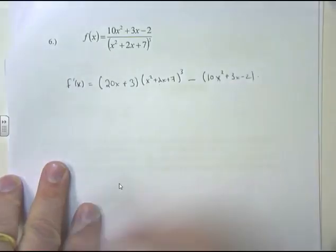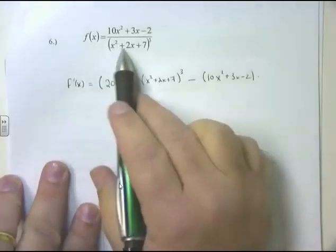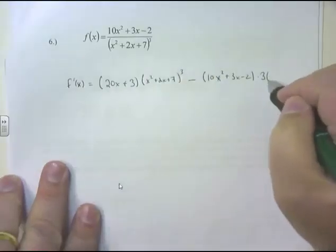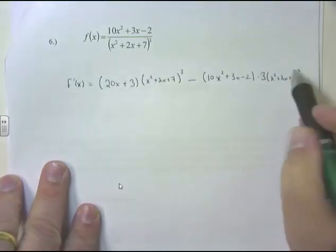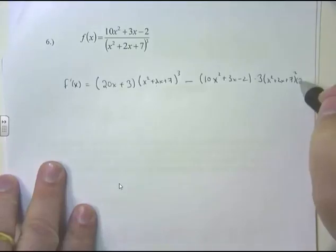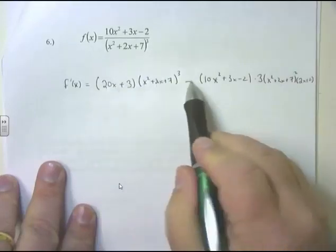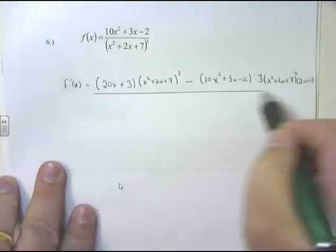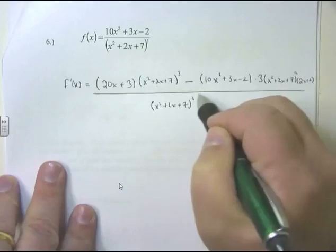Minus the top, 10x² + 3x - 2, times the derivative of the bottom. On the bottom, x² + 2x + 7 is on the inside, cubed on the outside — that screams chain rule. The 3 pops out front, the inside x² + 2x + 7 stays the same, raised to the squared power. Times the derivative of the inside: derivative of x² + 2x is 2x + 2. All over the bottom, (x² + 2x + 7)³, squared.